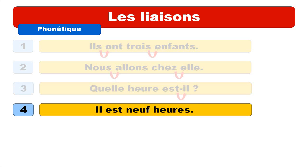Next example: il est neuf heures. With the liaison, you can see that it comes between neuf and heures, and it's quite tricky in this case because we will change the sound — we won't pronounce the F, but it will sound more like a V. So if you make the liaison, it sounds like: il est neuf heures. Repeat: il est neuf heures.